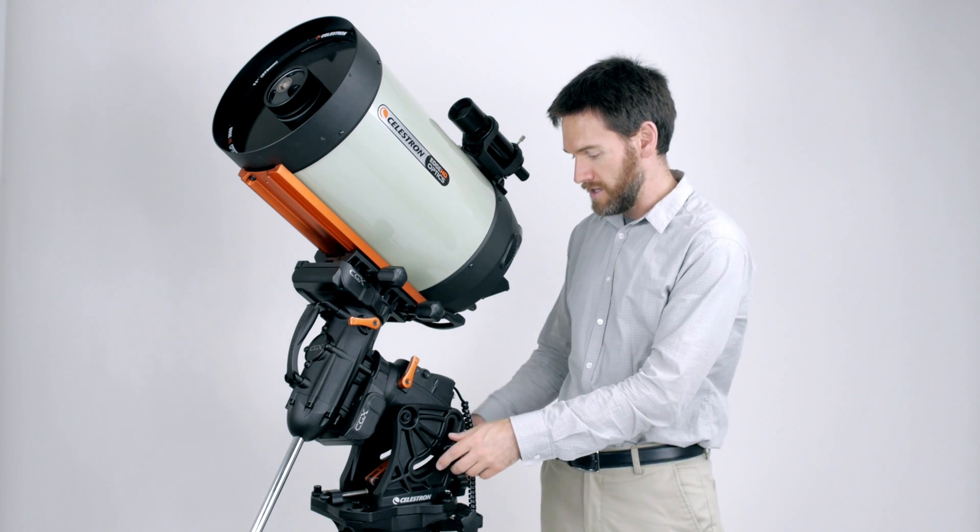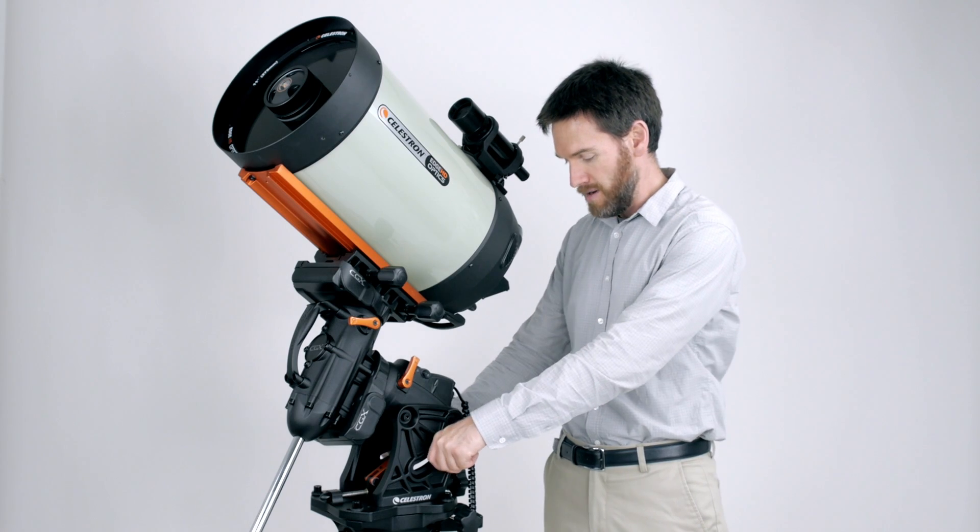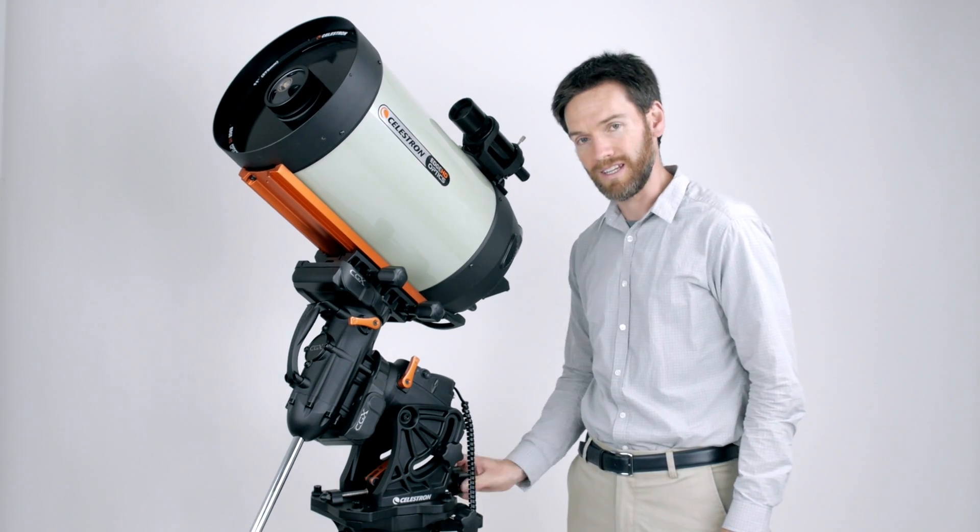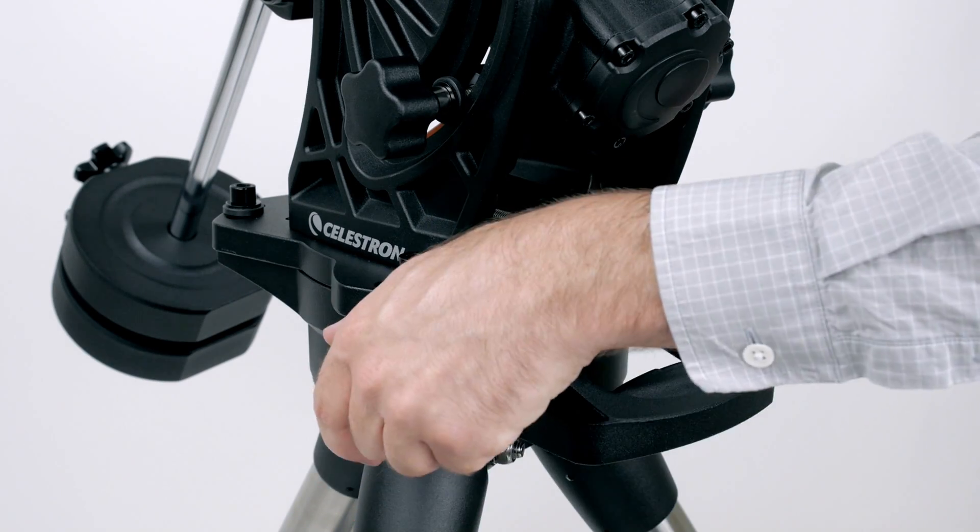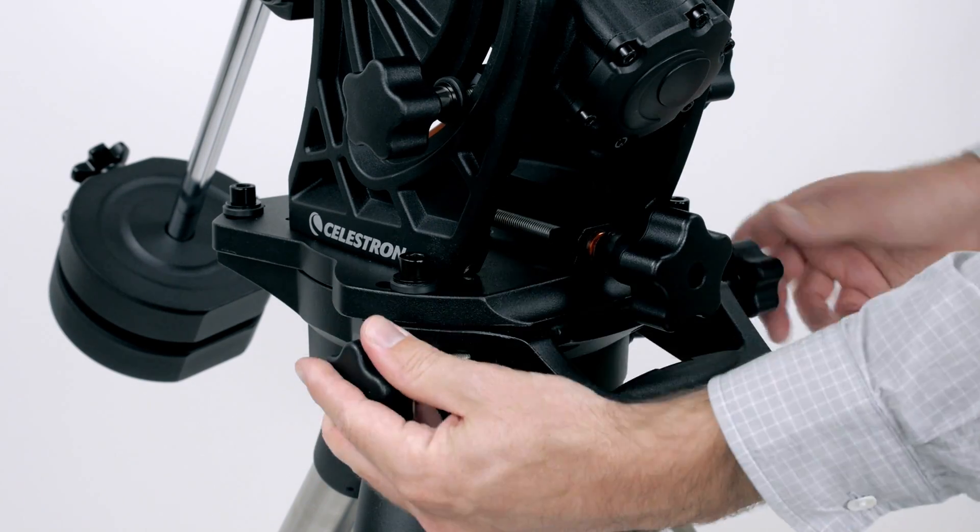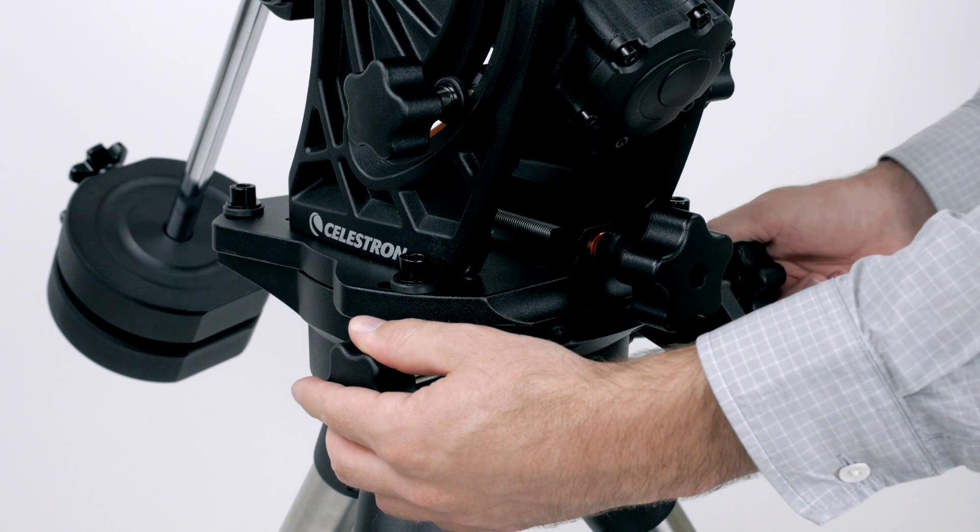You'll see with the Edge HD 11 and counterweights loaded on this mount, my altitude adjustment is really easy. I can just, with the turn of a wrist, make my adjustments. Also very simple. It rides on a Teflon bearing. I can do this with all the weight on the mount. It's never been easier.